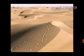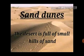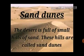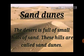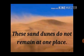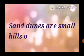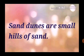Now let us see what sand dunes are. The desert is full of small hills of sand — these hills are called sand dunes. These sand dunes do not remain at one place; they keep on shifting from one place to another when the wind blows.